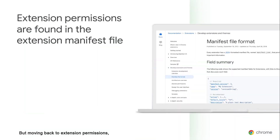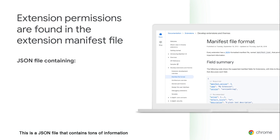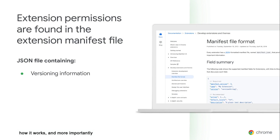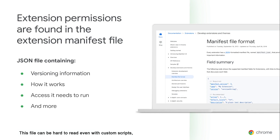Moving back to extension permissions, these are actually embedded within the manifest file of the extension itself. This is a JSON file that contains tons of information about the extension, like versioning information, how it works, and more importantly, the access it needs to run. This file can be hard to read, even with custom scripts, as it tends to provide unreliable information.